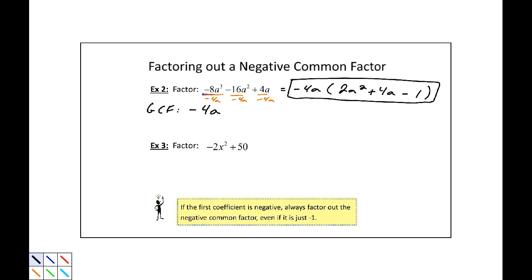Example three, factor negative 2x squared plus 50. Well, our GCF is going to be negative because we have a negative 2x squared, a leading term. And 2 divides into 2 and 50, so negative 2, no x's in common. This would be equal to negative 2, parentheses. And if I divide each of these by negative 2, that will give us an x squared minus 25. Now this actually factors more. We're going to cover that in another video in this same section. Now if the first coefficient is negative, the leading coefficient, always factor out the negative common factor, even if it's just a negative one.